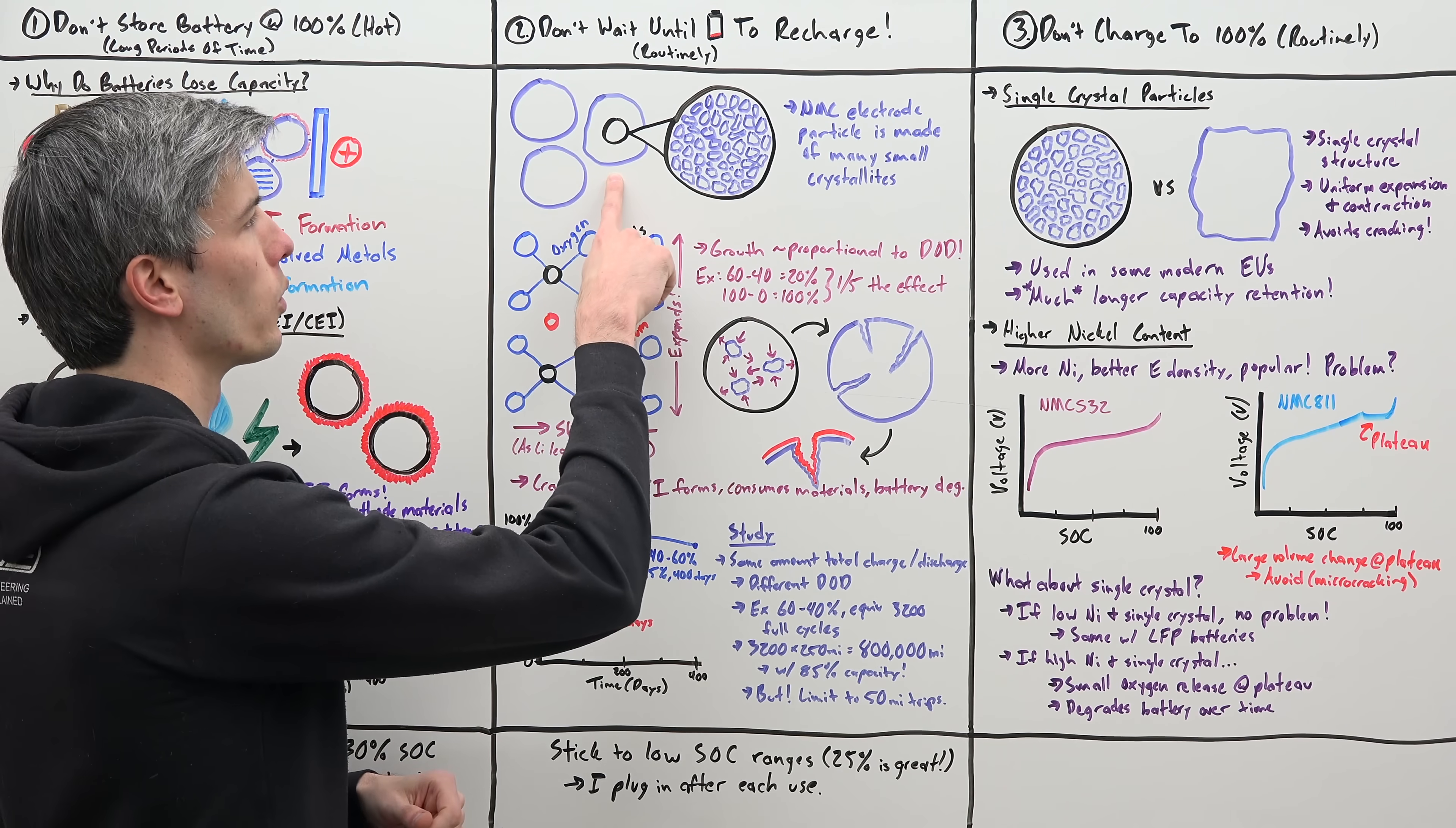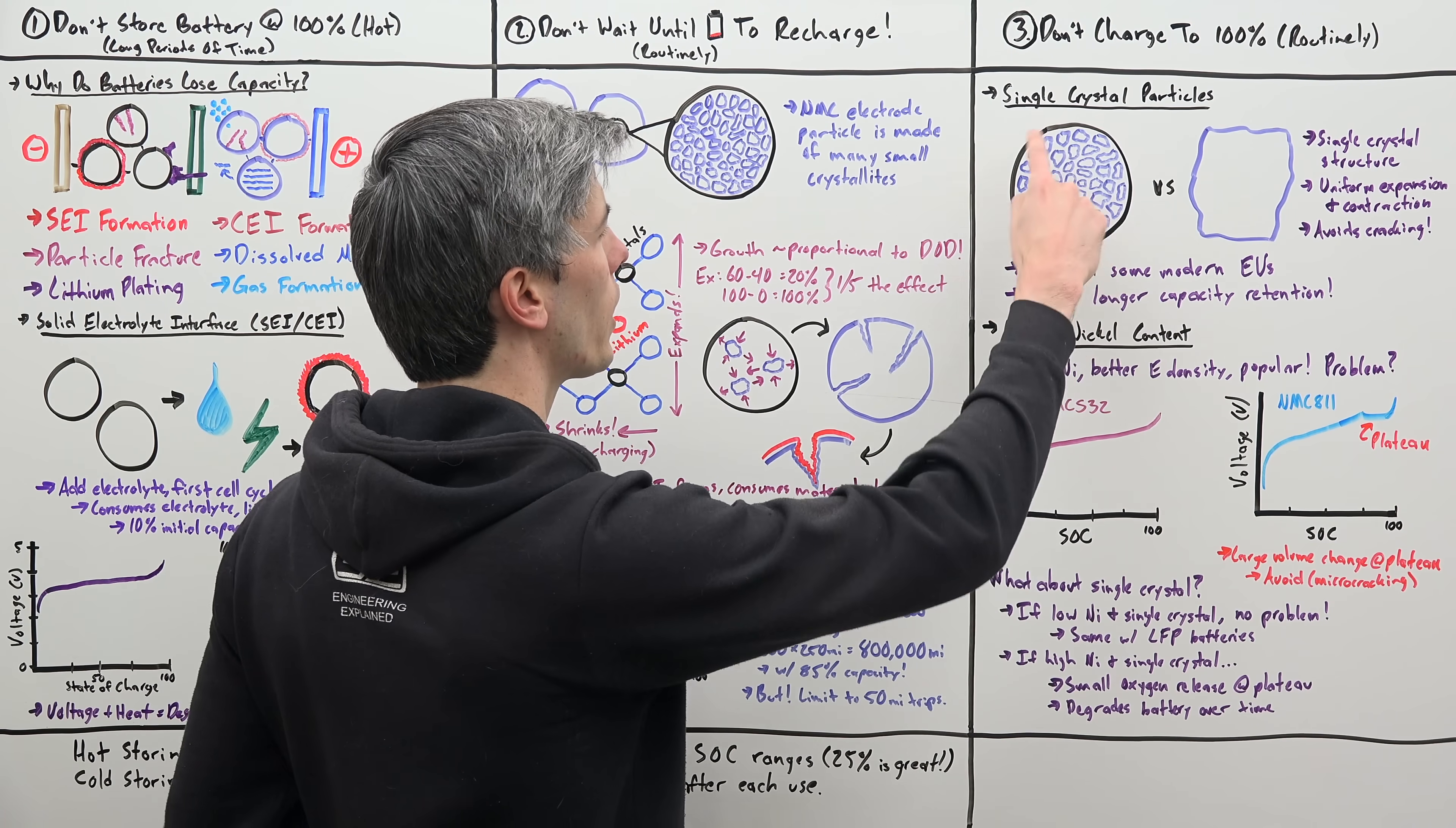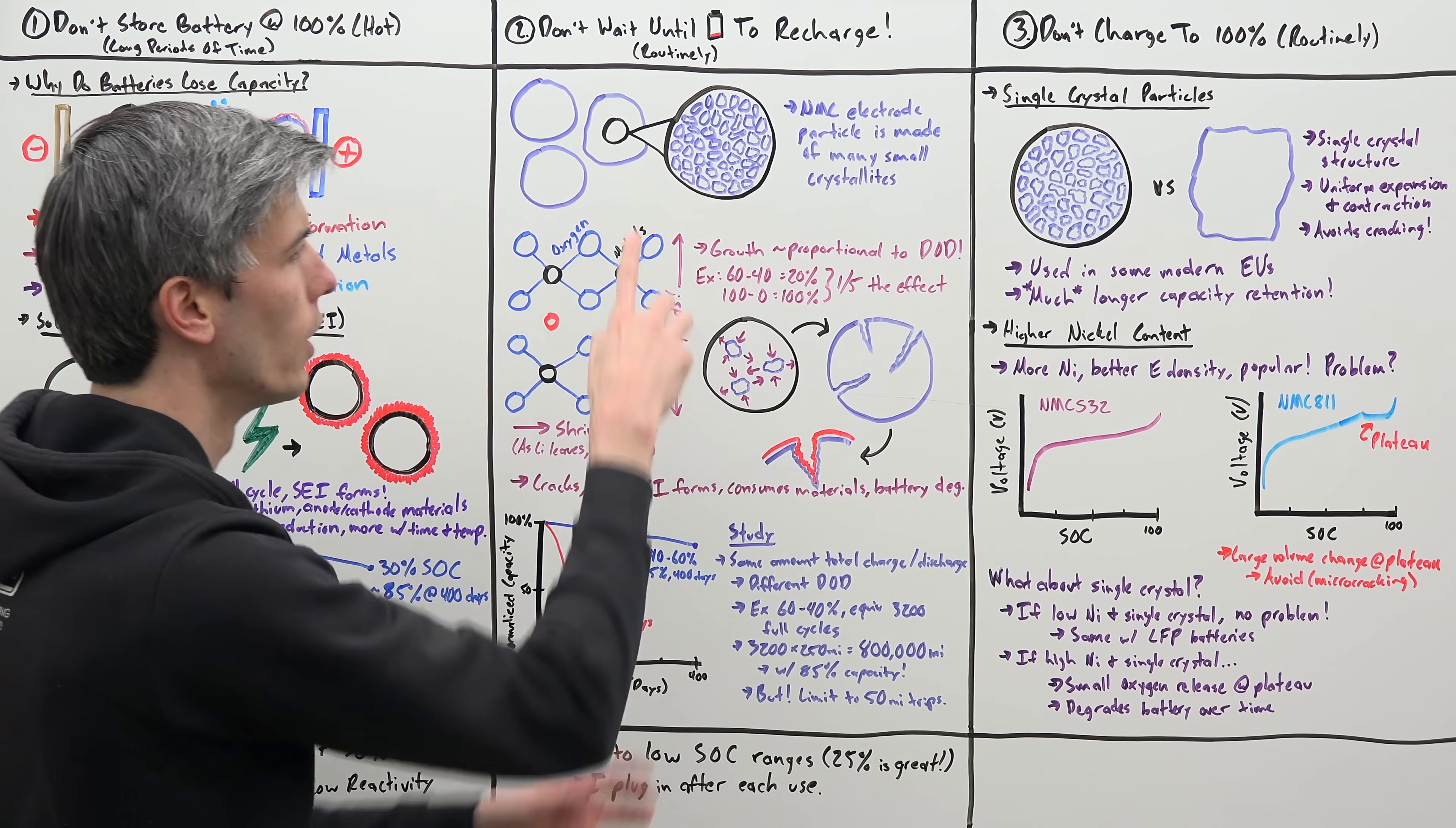Now once again, looking at the particles that make up our cathode, there's a very clever solution here where instead of using a bunch of many small crystals, you use a single crystal structure for the entire particle.